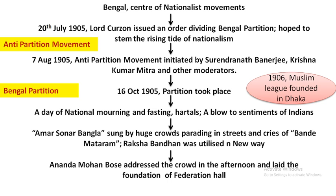If you look at the partition, you can see it divided West Bengal and East Bengal. In the whole Bengal province, the Muslim community was a minority and non-Muslims or Hindus were the majority. But the partition made East Bengal a Muslim majority area and West Bengal a Hindu majority area.